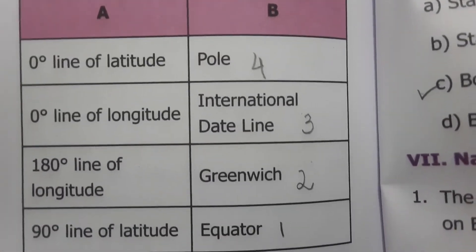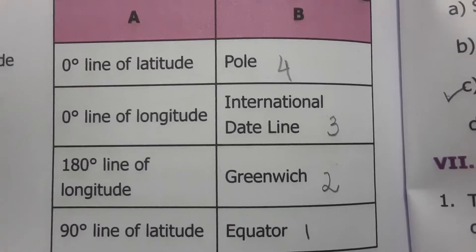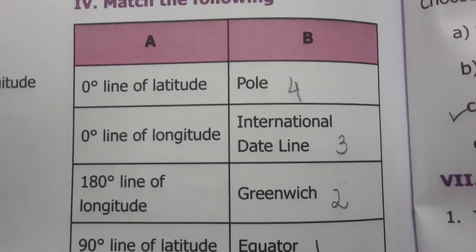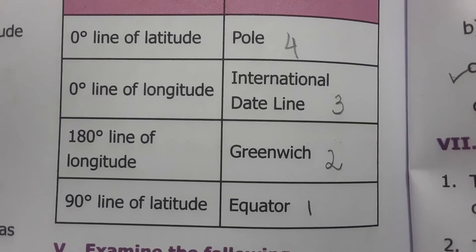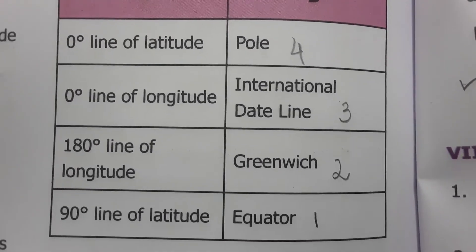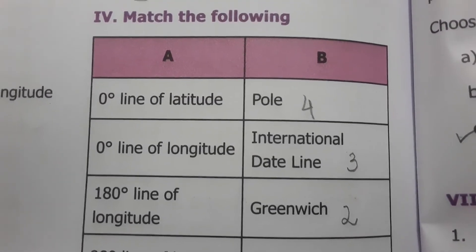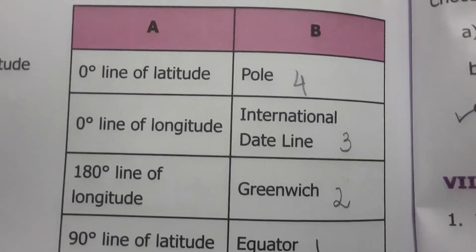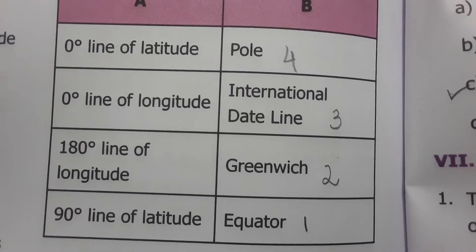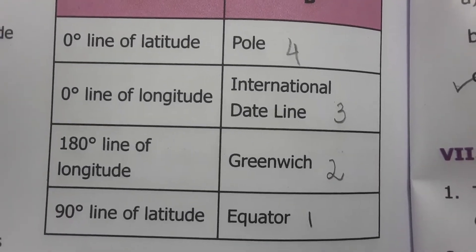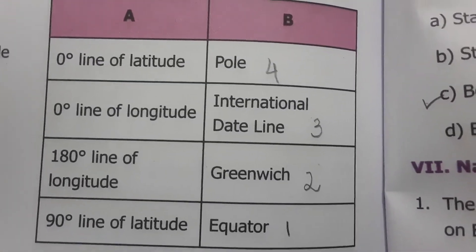Match the following: The zero degree line of latitude is the equator — the equator splits the Earth into two halves, the Southern Hemisphere and Northern Hemisphere. The zero degree line of longitude is the Greenwich Meridian, from where time is calculated — every degree you cross from zero longitude, four seconds are added. The 180 degree line of longitude is the International Date Line. The 90 degree lines of latitude are the poles — 90 degrees North is the North Pole, 90 degrees South is the South Pole.